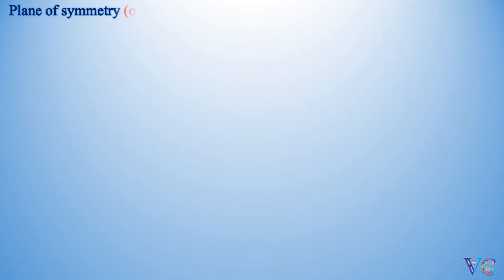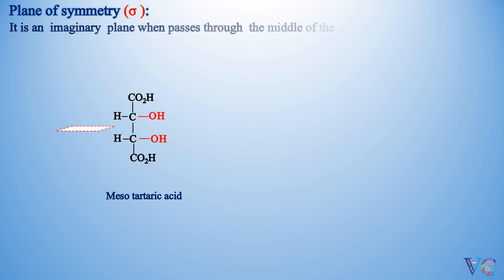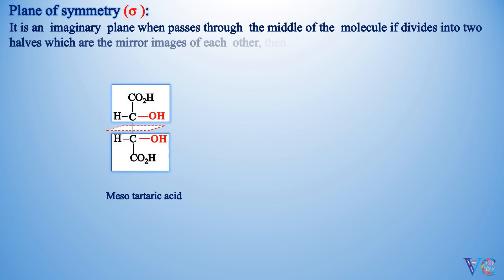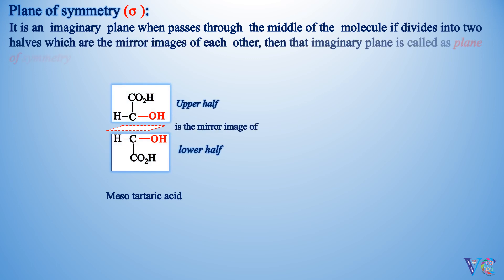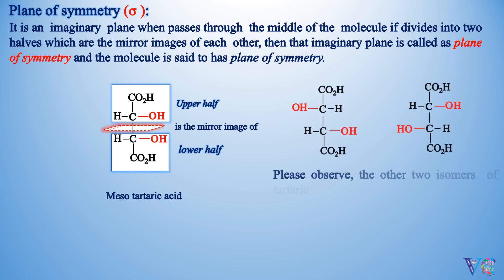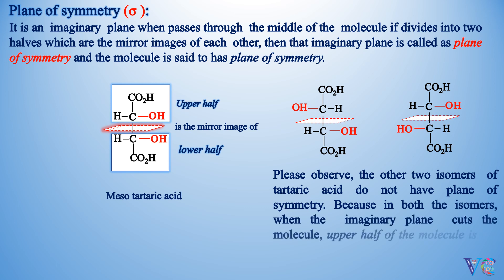Plane of symmetry — it is an imaginary plane which, when it passes through the middle of the molecule and divides it into two equal halves that are mirror images of each other, then that imaginary plane is called a plane of symmetry. Please observe that the other two isomers of tartaric acid do not have a plane of symmetry, because in both isomers, the upper half of the molecule is not the mirror image of the lower half.